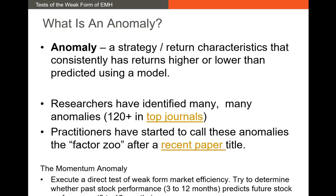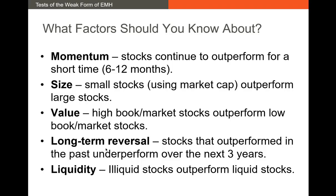There's actually a recent paper by Chen et al. that refers to the 'factor zoo,' indicating this huge number of anomalies that have been discovered. What they find is that usually after these anomalies are discovered, they tend to attenuate. In other words, researchers may have found a positive alpha in their research, but once it's announced, that alpha very quickly becomes statistically insignificant.